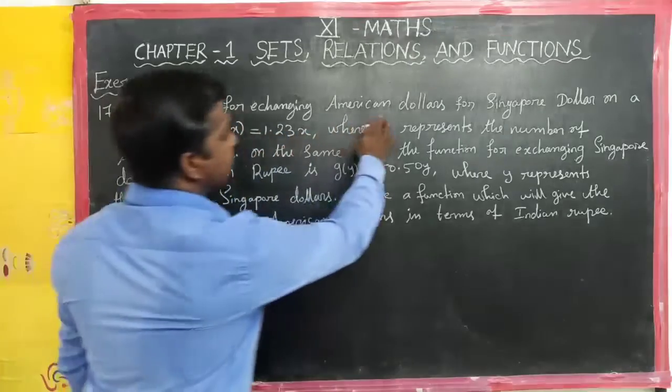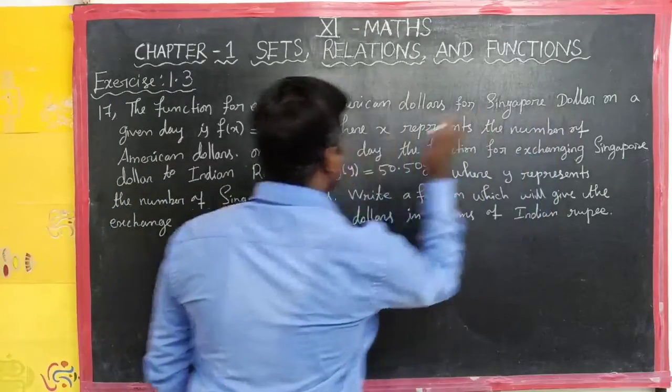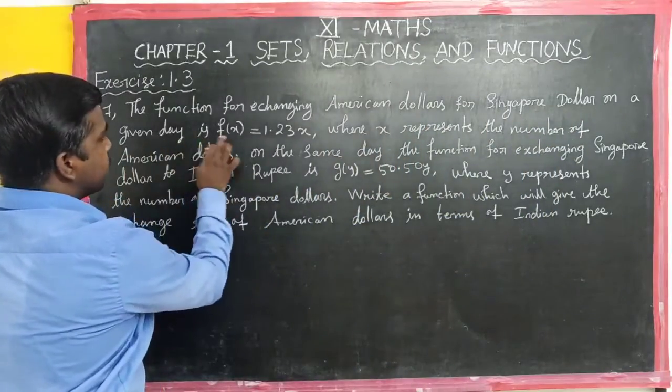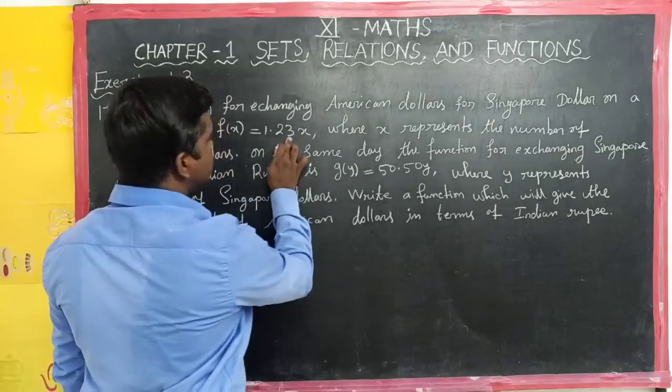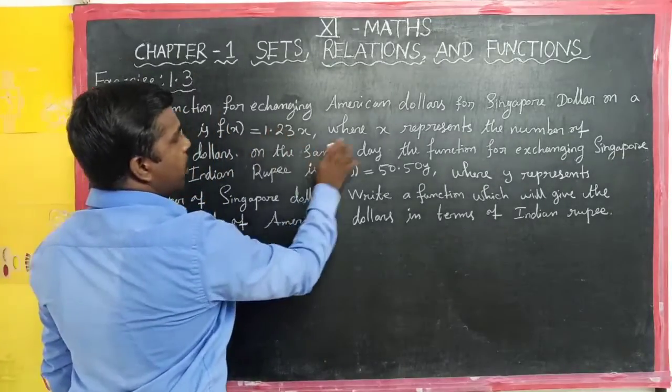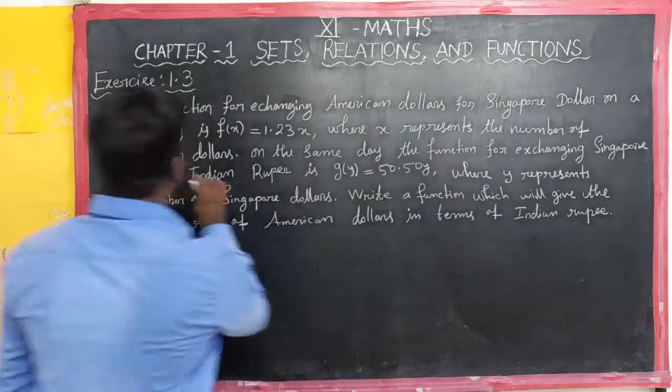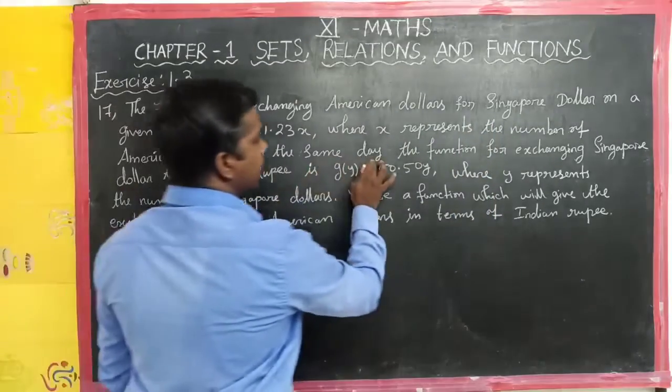The function for exchanging American dollars for Singapore dollar on a given day is f of x is equal to 1.23x.